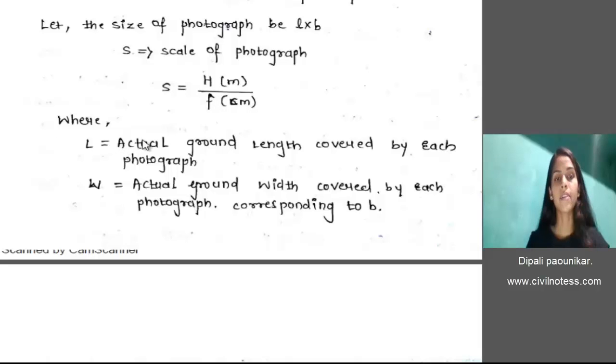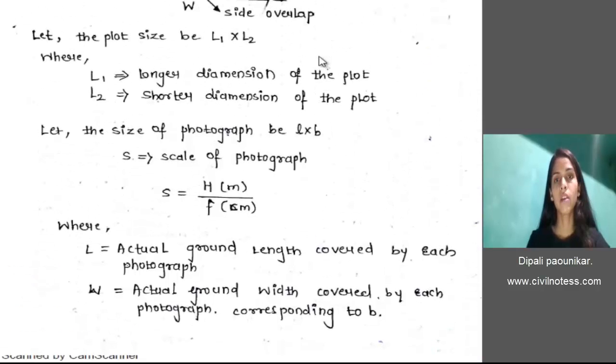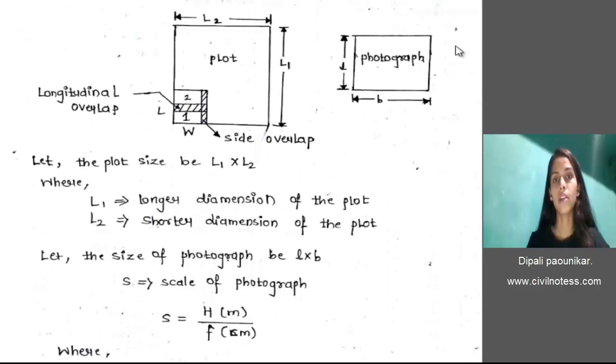Where L is the actual ground length covered by each photograph, corresponding to length of photograph that is L.